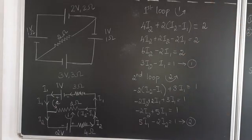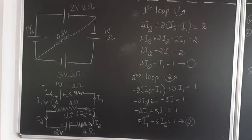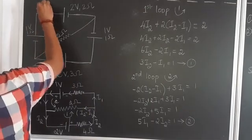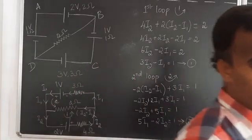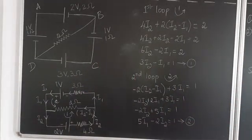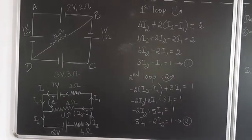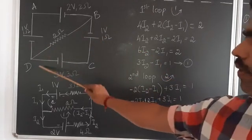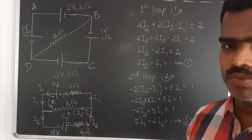In the diagram, the points given are A, B, C, and D. They are asking what is the potential difference between B and D. For this kind of problem, we should first analyse the circuit.